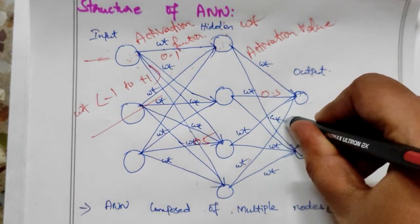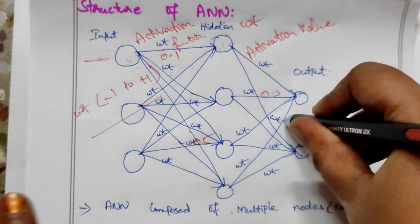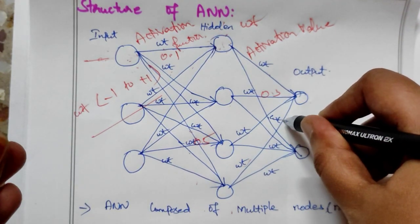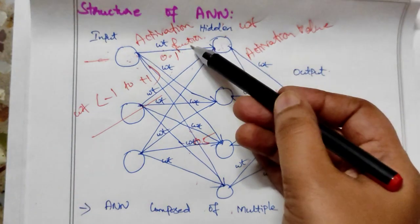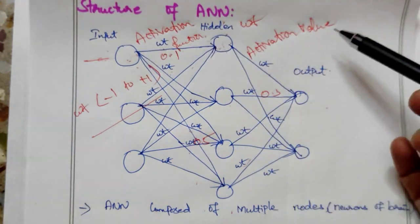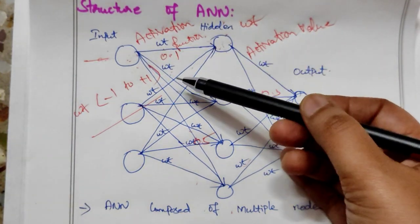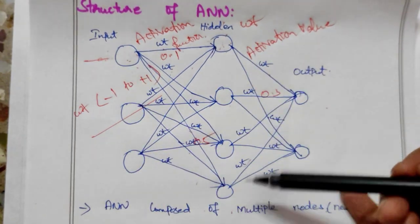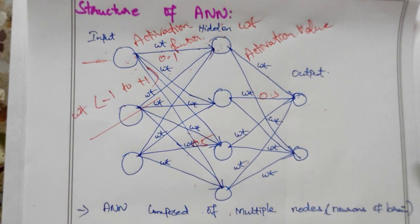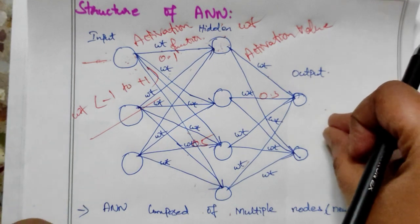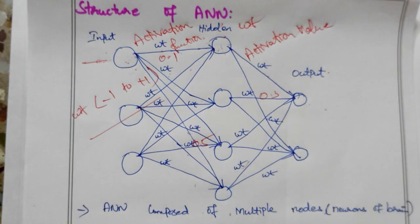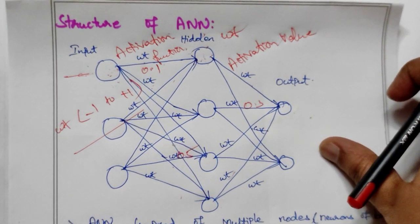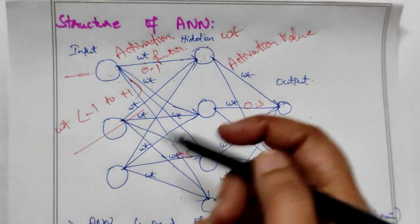Weights are mainly used to control the signals between nodes. Now, the major key points are: activation function, activation value, weights, and three layers — input layer, hidden layer, and output layer. These are important keywords in the structure of the artificial neural network.